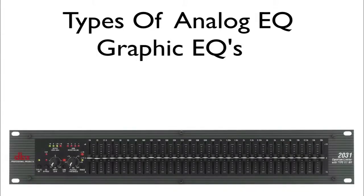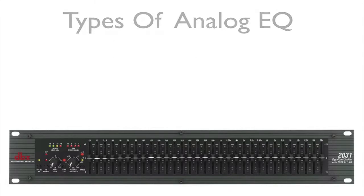Graphic equalizers also implement second-order filter functions, but in a more user-friendly manner. This equipment is based on a bank of filters covering the audio spectrum in up to 30 frequency bands. Each second-order filter has a fixed center frequency and Q but an adjustable level. The user can raise or lower each slider to visually approximate a graph of the intended frequency response.